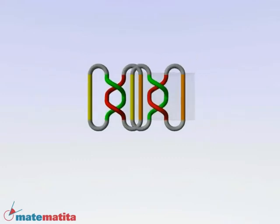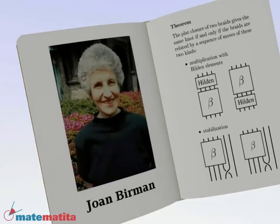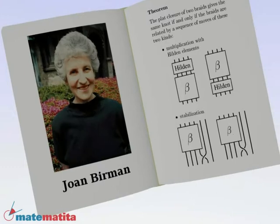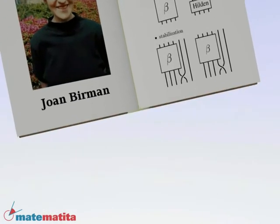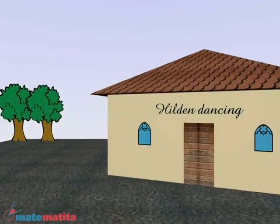Byrman shows that these moves are enough. Two braids give the same knot if and only if they can be turned into each other through a sequence of moves of the two types. So, the hidden subgroup, that is, the dances of couples, is one of the main ingredients of this theorem.